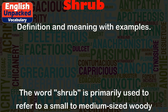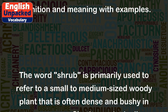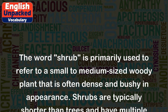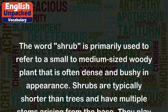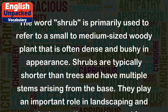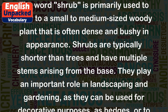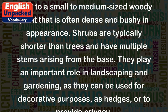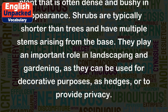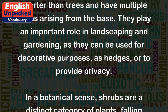The word 'shrub' is primarily used to refer to a small to medium-sized woody plant that is often dense and bushy in appearance. Shrubs are typically shorter than trees and have multiple stems arising from the base. They play an important role in landscaping and gardening, as they can be used for decorative purposes, as hedges, or to provide privacy.